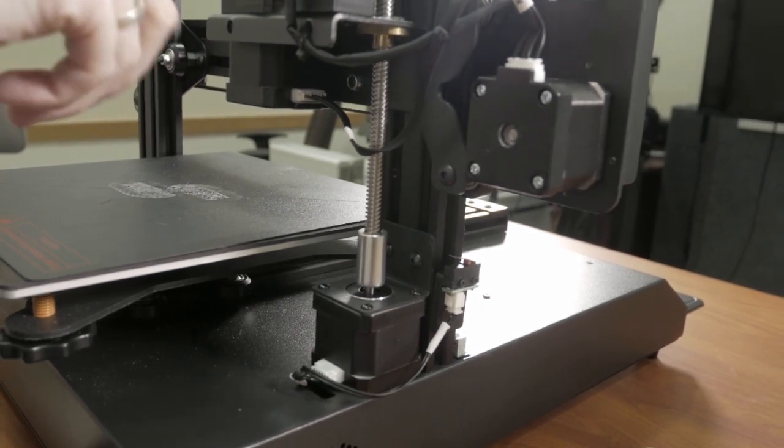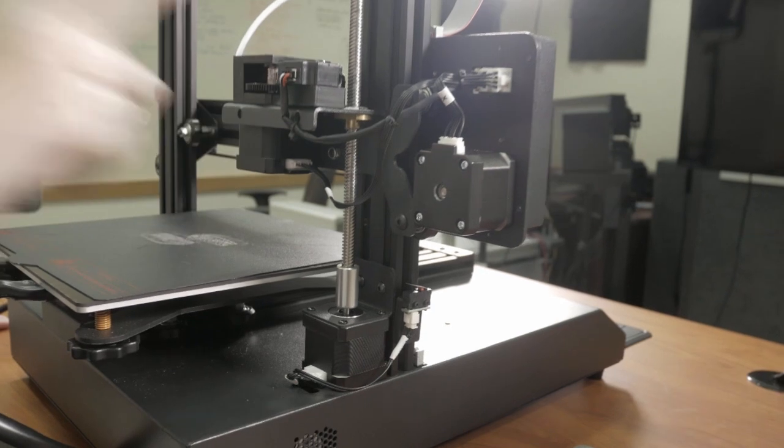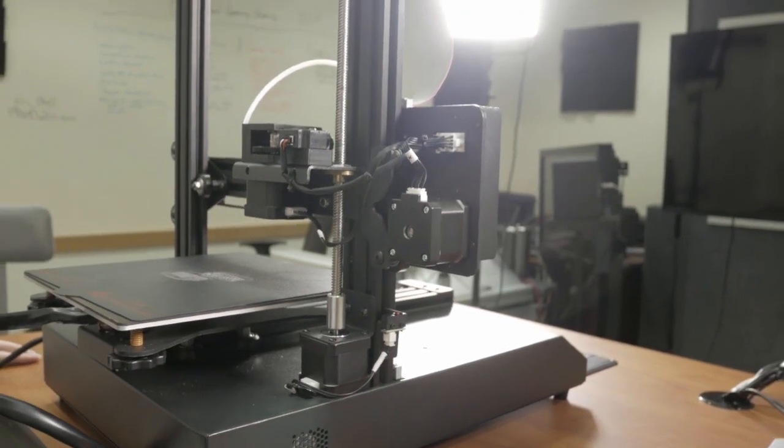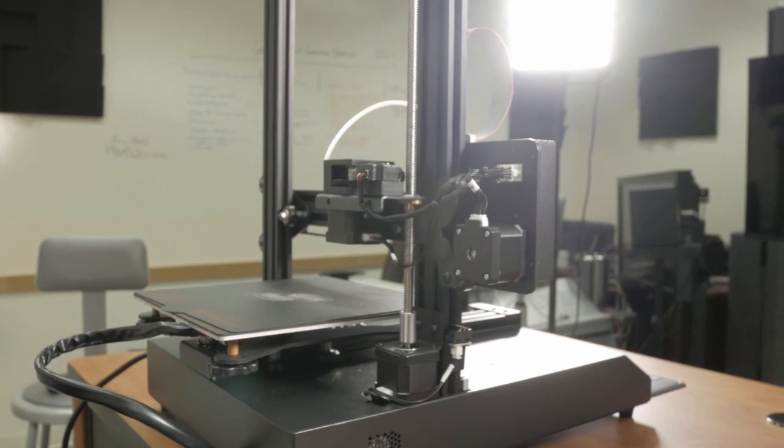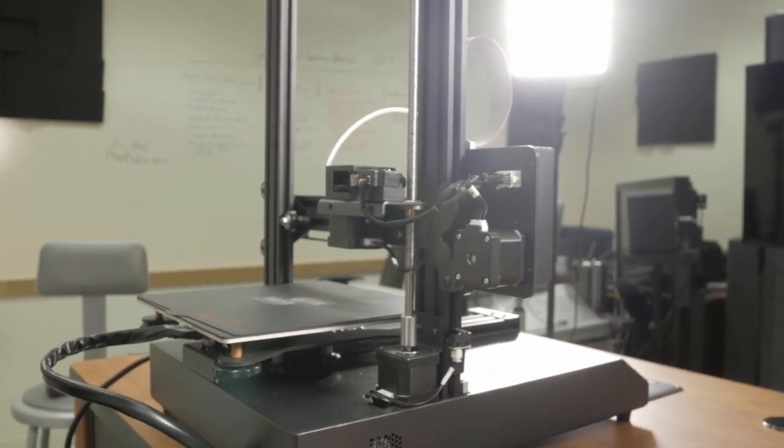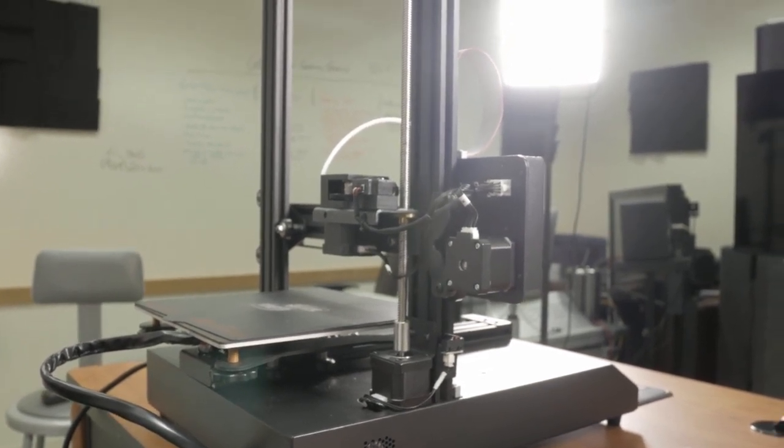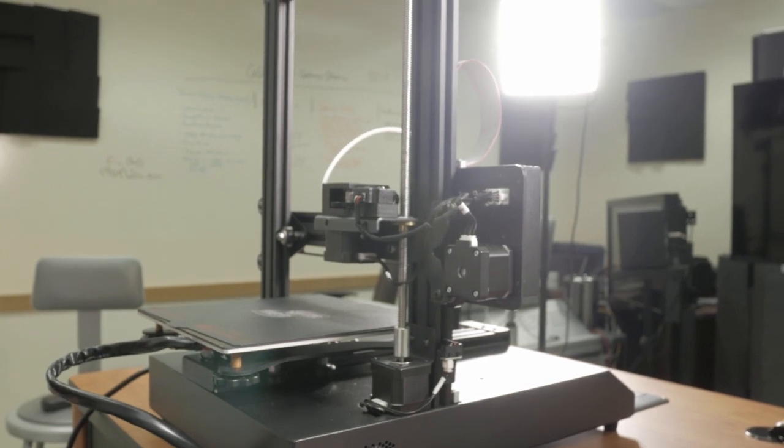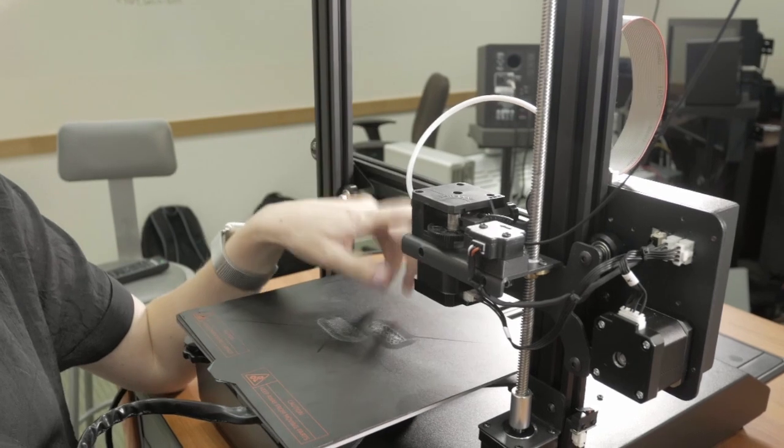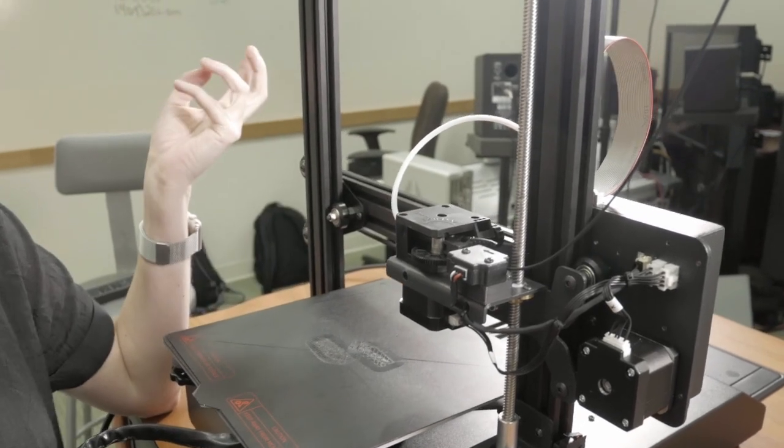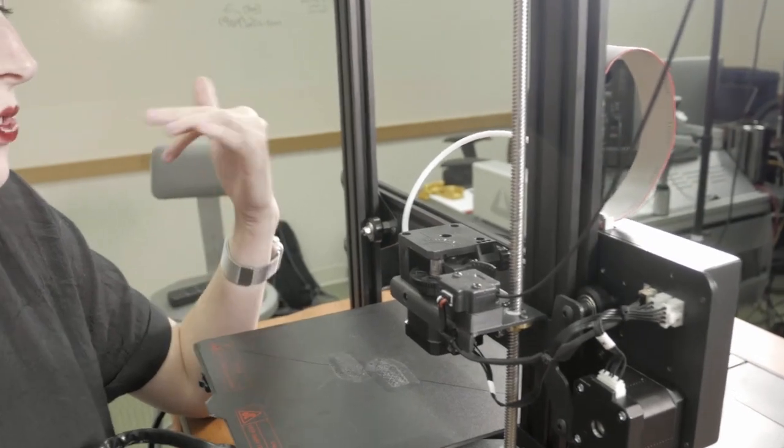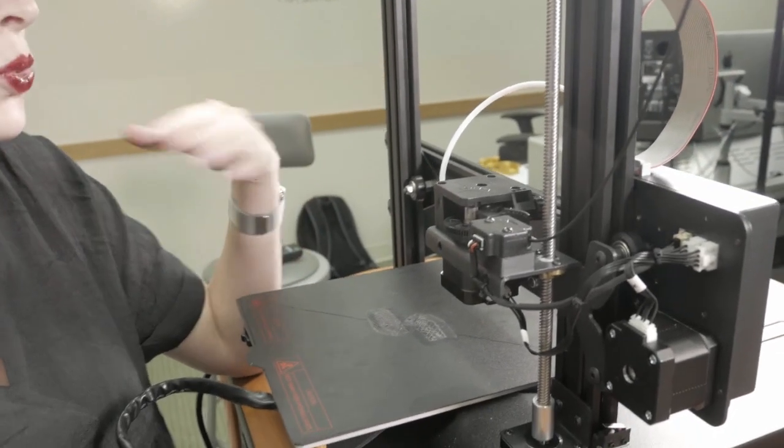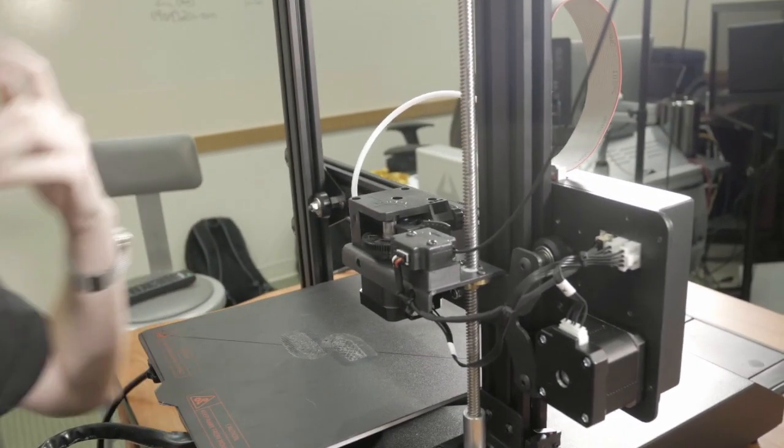This printer does come with a filament runout sensor. What this does is it stops your print if you run out of filament, which keeps you from coming home to a half-printed item. So we're going to load some filament and get a print going. This particular model uses Bowden tubing. My preference is actually a direct drive, but that's okay. Bowden tubing is really easy to come by. It works well. That's just my personal preference.